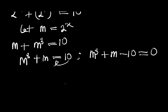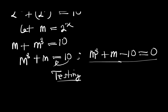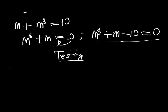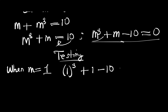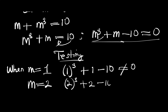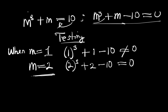From here we can use the testing method. We are going to test for the value of m that will satisfy this equation, starting from m = 1. When m = 1: 1^3 + 1 - 10 is obviously not equal to 0. When m = 2: 2^3 + 2 - 10 = 8 + 2 - 10 = 0. That means m = 2 is one of the solutions, and we can write (m - 2) = 0.